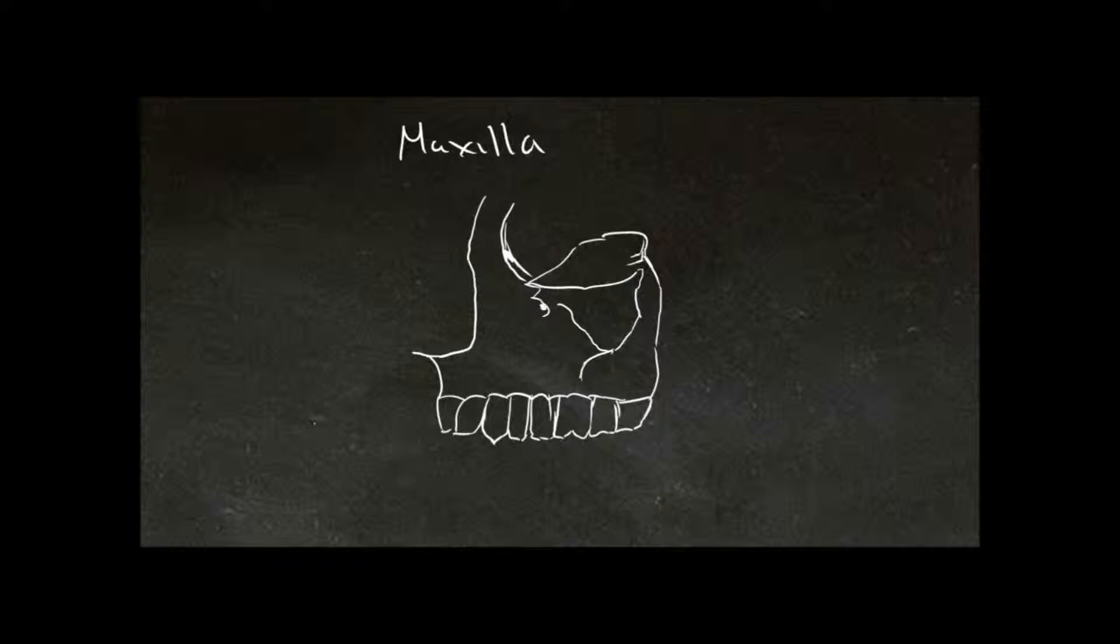So we're looking at the ectocranial surface. Here we have the frontal process. This is the part that's articulating with that middle part of the frontal bone, and this allows us to orientate the bone, so we know that this is superior.